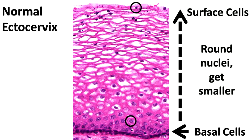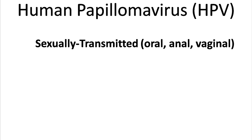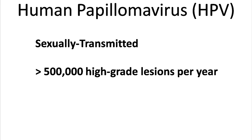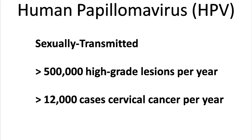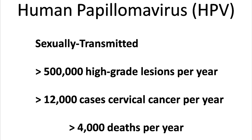Cells mature and get smaller as they move towards the surface of the epithelium. The human papillomavirus is a sexually transmitted disease, and although many people who are infected will go on to clear the virus naturally without any medical treatment, there are still over 500,000 high-grade precancerous lesions diagnosed in the United States annually. There are also over 12,000 cases of cervical cancer diagnosed in the United States annually, and over 4,000 deaths from cervical cancer.